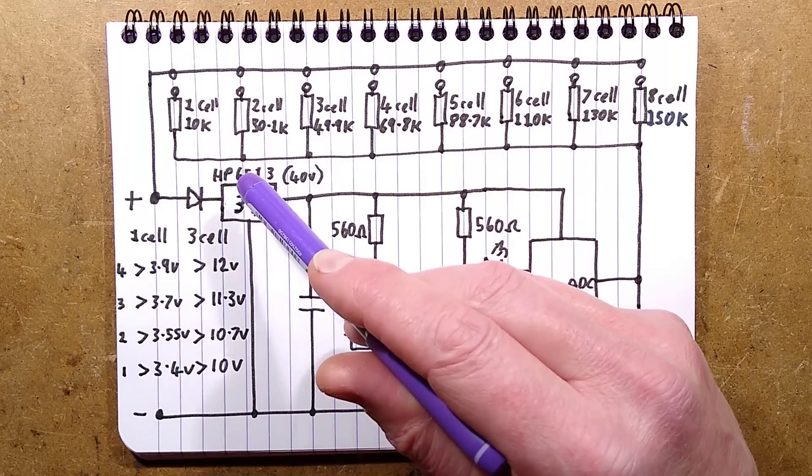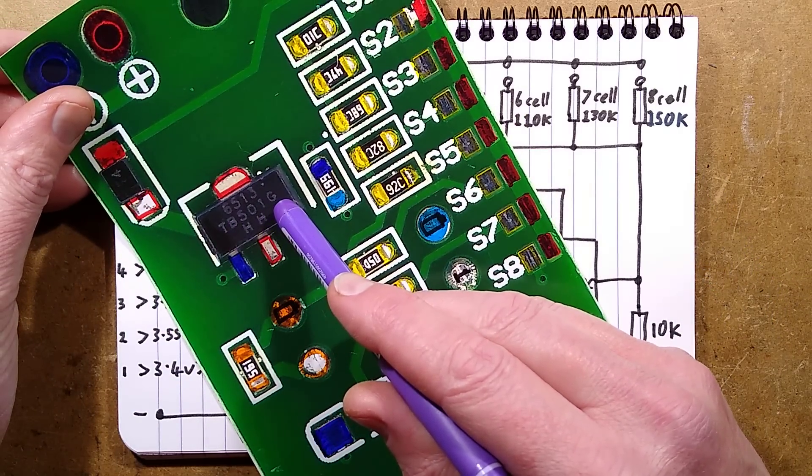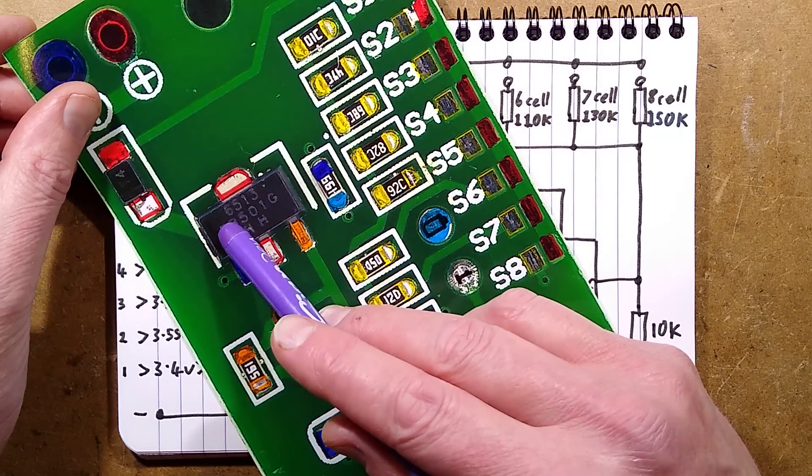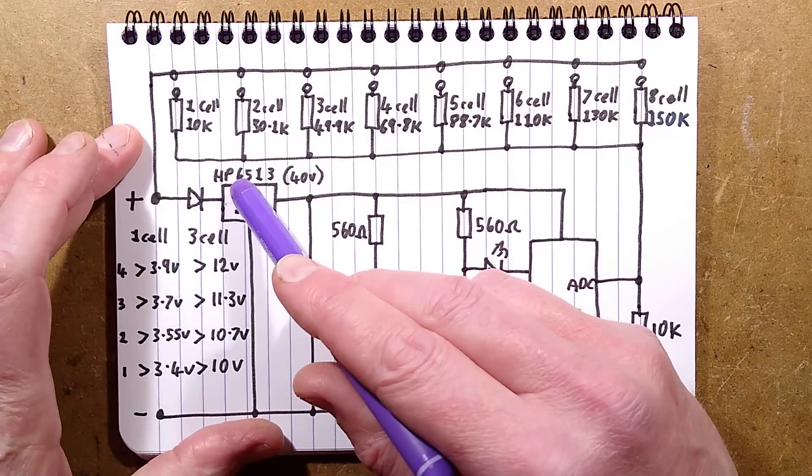It's worth mentioning the regulator has other numbers on it. TB 501 G that drew a blank, but 6513 did find a regulator with the same pin out HP 6513.